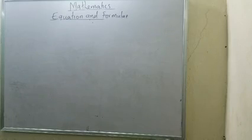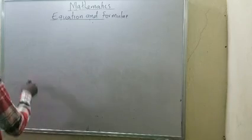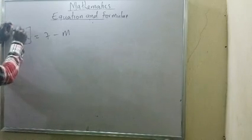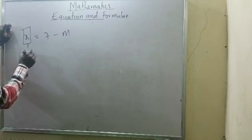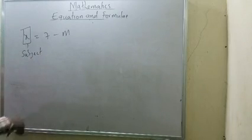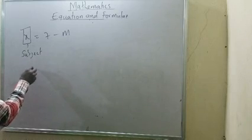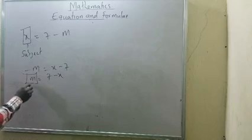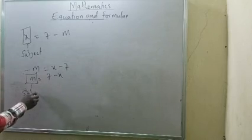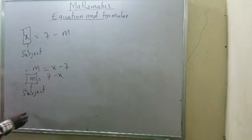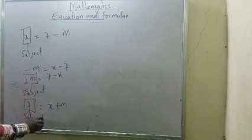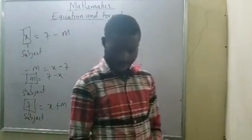Regarding change of subject or formula: if I have x = 7 − n, the subject of the formula is x. I can change the subject to n by subtracting 7 from both sides, giving n = x − 7 (or equivalently −n = x − 7, making n the subject). I could also make 7 the subject by writing 7 = x + n. The subject can be changed to any variable in the equation.